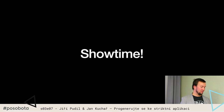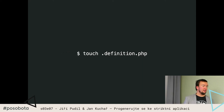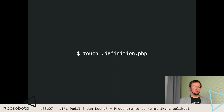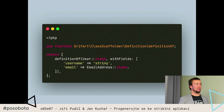Jak ten scaffolder použít? Dobrý začátek je se ho nainstalovat, ideálně jako dev závislost - stejně to není něco, co byste chtěli mít v produkčních závislostech a posílat na produkci. Ten scaffolder funguje na bázi definičních souborů. Konvence je taková, že musí končit .definition.php. Takový definiční soubor vypadá třeba takhle. Snažili jsme se dostat zápis definičního souboru do stavu, aby to byl takový domain specific language - aby se to psalo i četlo jako věta. Takže si z toho definičního souboru vrátím definici nějakého objektu.